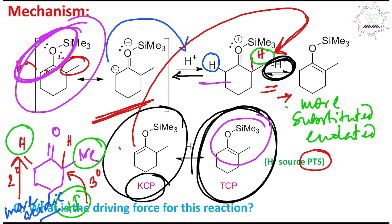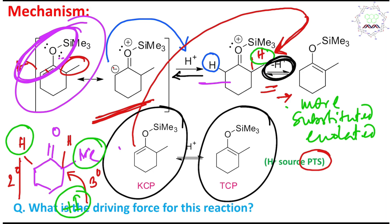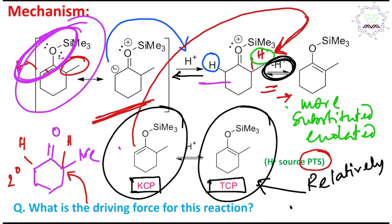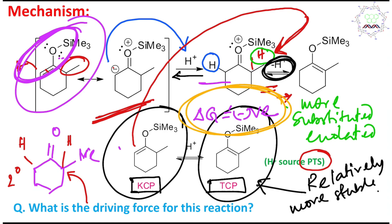Now, what is the driving force of this reaction? KCP is relatively less stable than TCP — point number one. So from a less stable species, you are getting a relatively — I repeat, student, relatively — more stable species. During this conversion, there is a delta G. It is true that it is slightly less negative, but still this delta G is negative. If delta G is negative, that is the condition for spontaneity. So you can understand that after some time, all the KCP — this enolate — will be converted into the corresponding TCP in the presence of this acid.